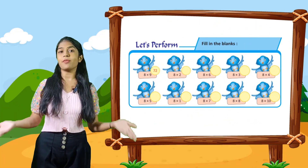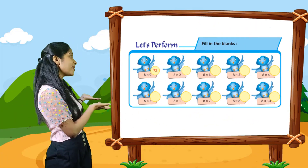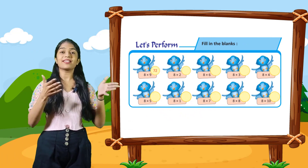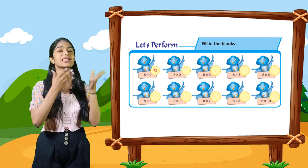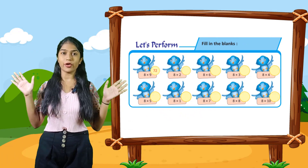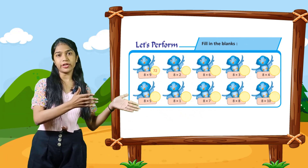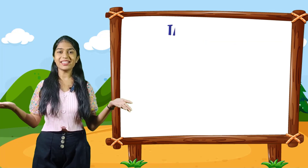So now let's perform. Fill in the blank. Here are the blanks and you have to fill in the blanks. First one is already written for you: 8 into 9 is equal to 72. Rest you have to do yourself.